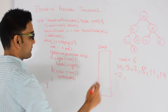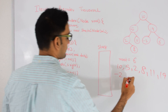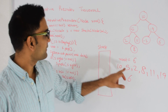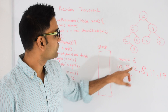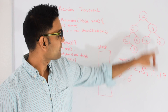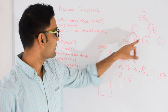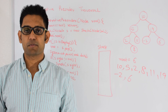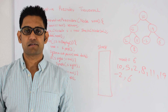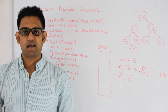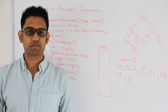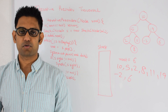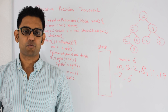We pop out 6. 6 doesn't have left or right, and we print 6. So this is my pre-order traversal: 10, 5, 2, 8, 11, 19, minus 2, and 6. If you want the running code for this problem, go to my GitHub at github.com/mission-peace/interview-wiki, and if you want to check out similar questions go to my YouTube channel at youtube.com/user/tusharoy2525. Thanks for watching this video.